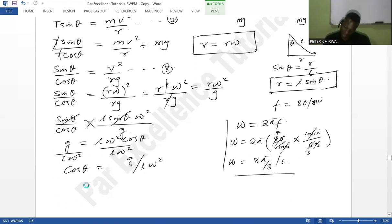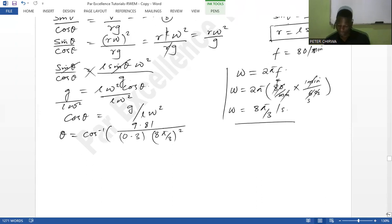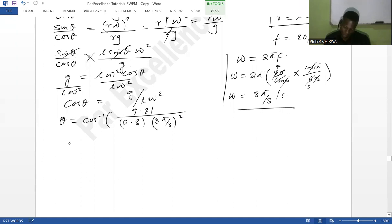So now we can say cos theta is going to be 9.81 as the gravitation acceleration, and the length, which is going to be 0.3, yeah because it was 30 centimeters, so in meters is 0.3. And we have 8 pi over 3 squared like that. So how do we get that one? So now the angle is basically going to be...